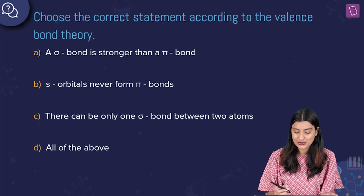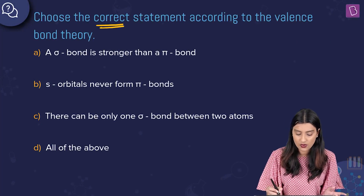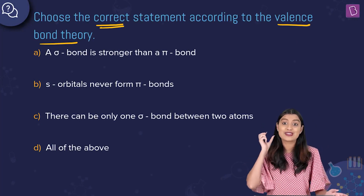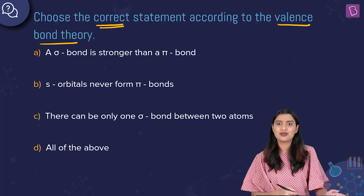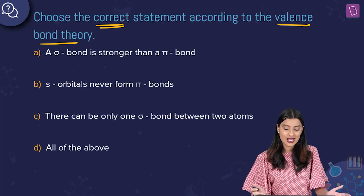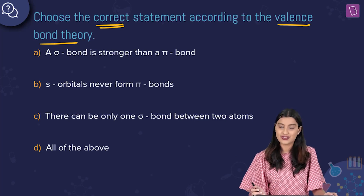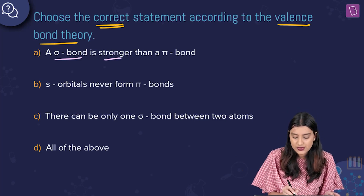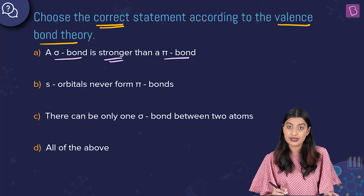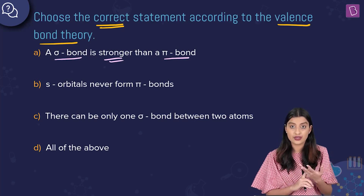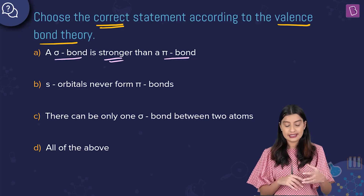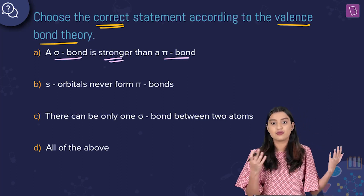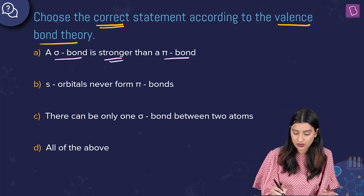Next question: choose the correct statement according to Valence Bond Theory. Option A: a sigma bond is stronger than a pi bond. Yes, this is true. A sigma bond is stronger than a pi bond due to more effective overlap — it takes more energy to break a sigma bond than a pi bond. This statement is true.